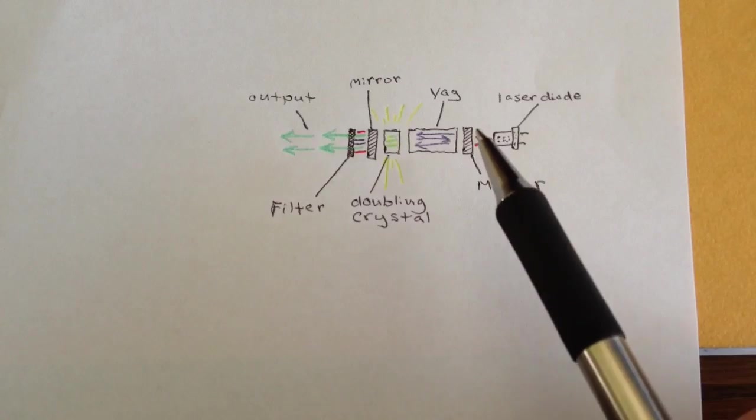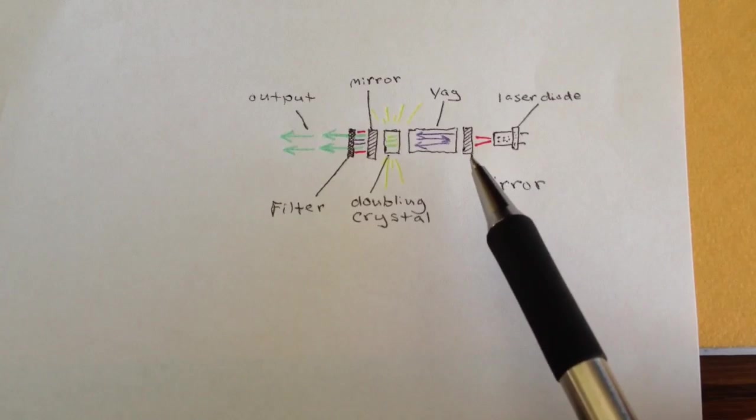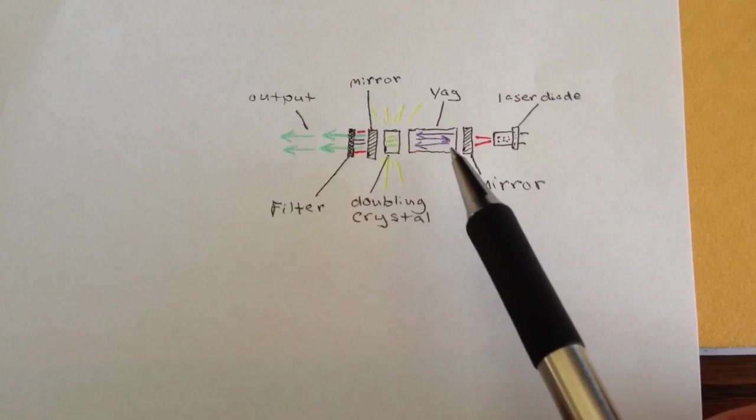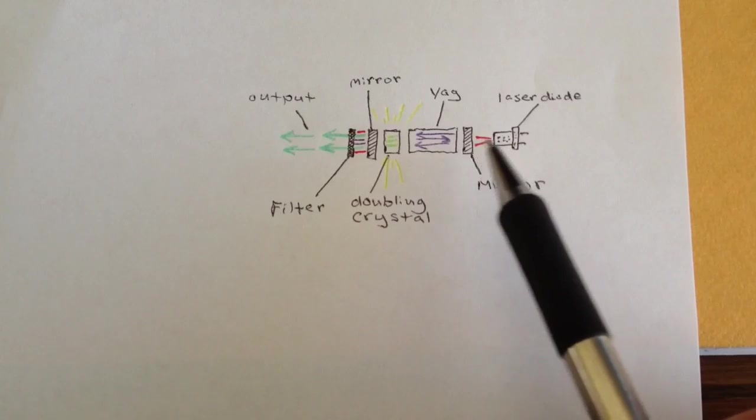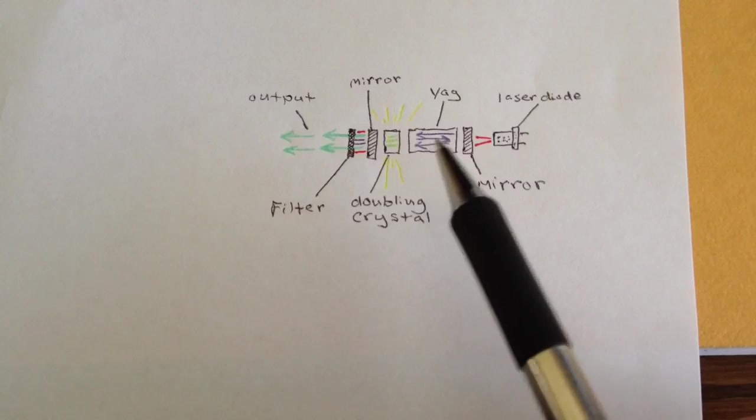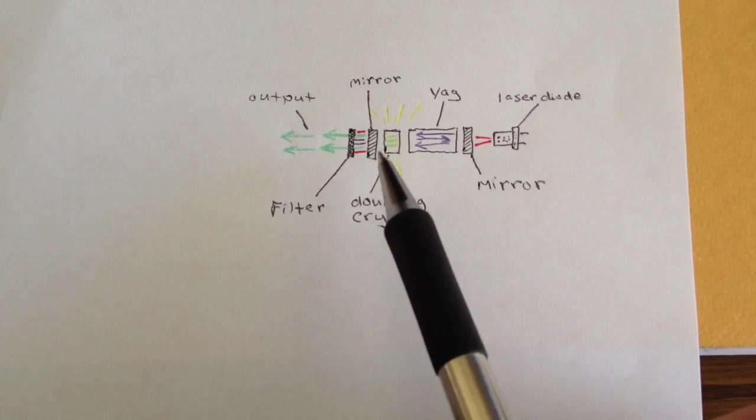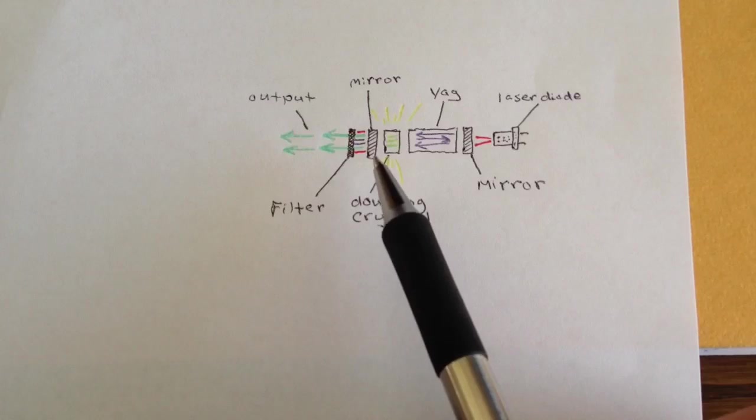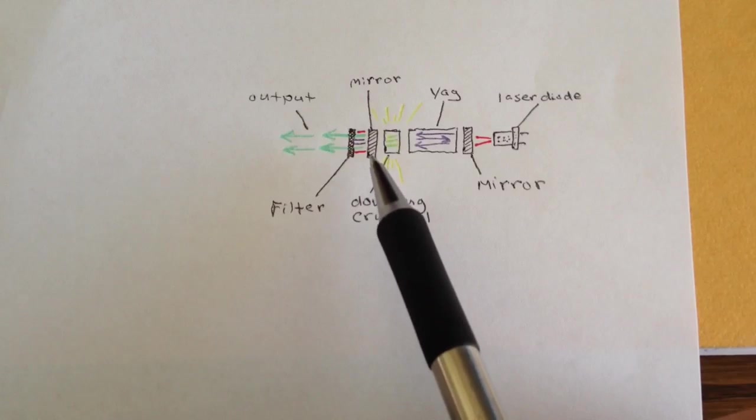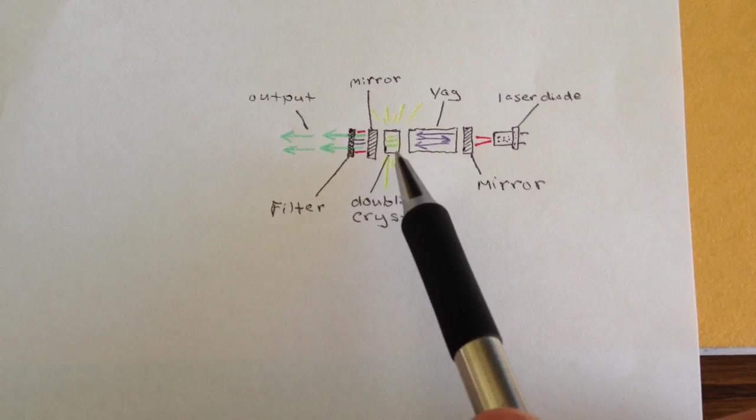Now, the way this works is you've got a mirror back here, and it's designed to reflect 1064 nanometers, but pass the 808 nanometers from the laser diode. And you've got a mirror on this other end here, and this mirror is designed to reflect 1064 nanometers, but pass 532 nanometers from this crystal.